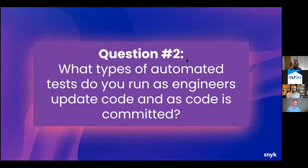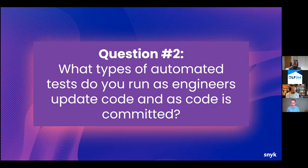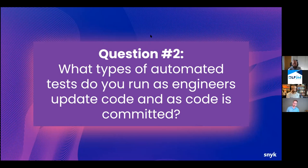If you do have these things in some sort of version control, what types of automated tests do you run as engineers update the code? As people make changes to infrastructure code and commit, what types of testing are you running? That was one of the things that came up as an obstacle to adoption and broadening the use of IaC. We have several options: simple linting, looking for style and syntax errors, various ways to validate your IaC. Each format tends to have either some sort of built-in testing or open source tools.